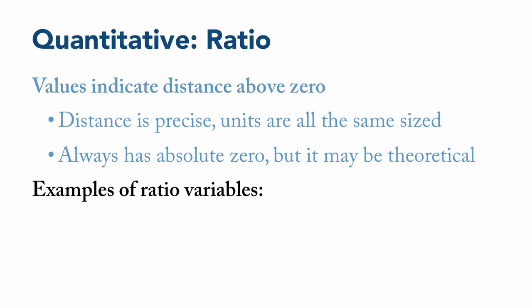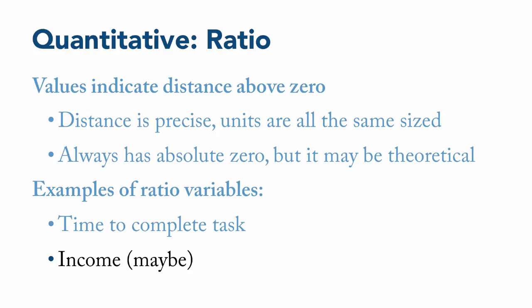A few examples of ratio level variables include the time it takes a person to complete a task. This is because time always starts at zero and goes up from there. A person who takes four minutes to complete a task takes twice as long as somebody who takes two minutes to do the same task. Income is another example, because in most situations, money starts at zero and goes up. As with time, a person who makes $100,000 per year makes twice as much money as a person who makes $50,000 per year. And these kinds of comparisons only make sense when the variable is at a ratio level.